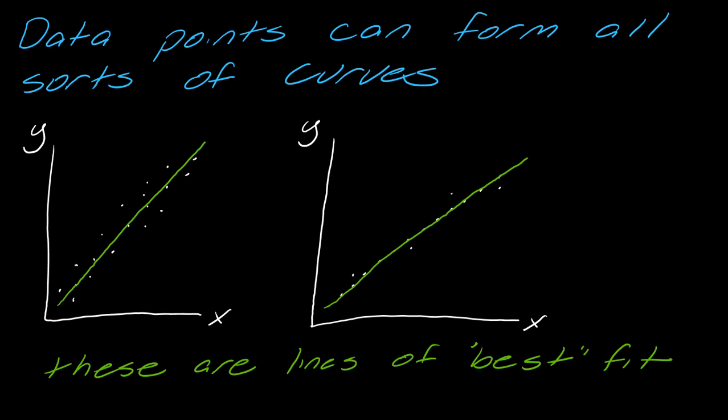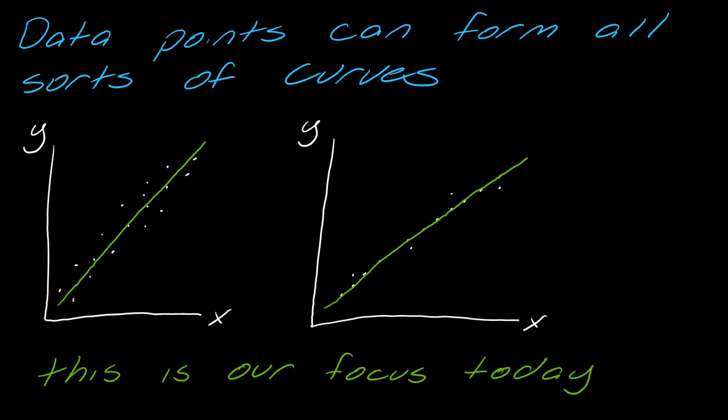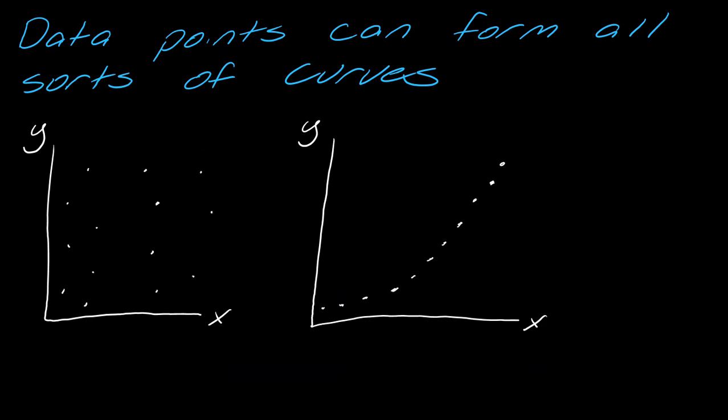This is going to be our focus for today, these specific lines of best fit, but the thing I just want to kind of mention here is that data can do a lot of different things. It doesn't just have to form a line so you could have something like this or something like this. In this case we can't see a line that would fit here right?